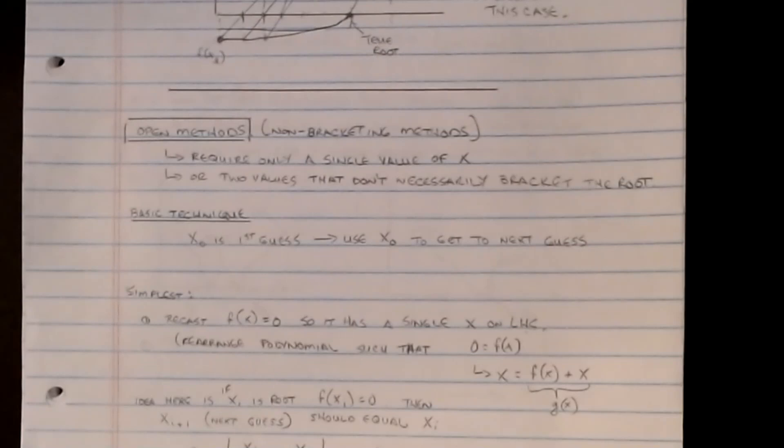The advantage of open methods is that we require only a single value of x, or maybe even two values that don't necessarily bracket the root — meaning one value on each side of the root. We want a methodology that will allow us to take two initial guesses and use those to predict a root, even if it doesn't bracket it.